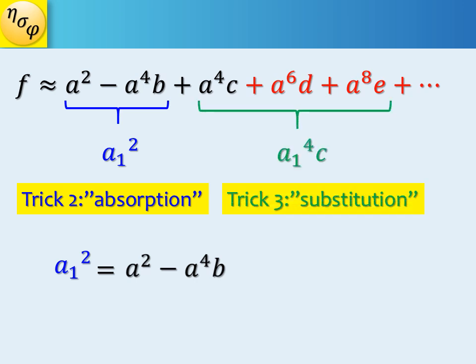The last trick is to substitute the last three terms of f with this a1 squared. Then we can calculate d and e in terms of b and c. The terms in red are again very small numbers.